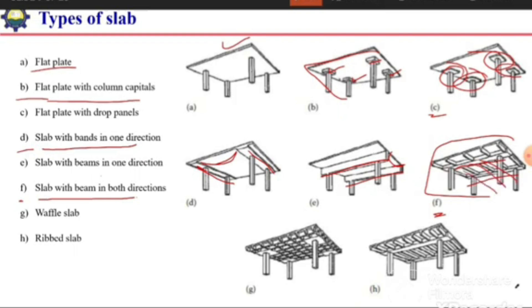The next is waffle slab. This is a flat plate with ribs provided in two perpendicular directions, closely spaced smaller ribs provided in two perpendicular directions. The last is ribbed slab.